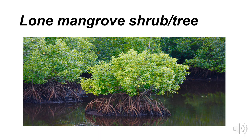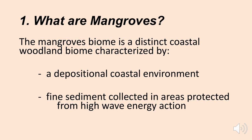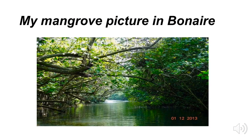Here's a lone mangrove shrub with a complex root system that digs itself down into the waterlogged mud. The mangrove biome is a distinct coastal woodland biome characterized by a depositional coastal environment. As sediments come off the land, mangroves trap that sediment. Fine sediment is collected in areas protected from high wave energy, and the mangroves themselves limit the high wave energy action, making a calm environment and a very good habitat for many organisms.